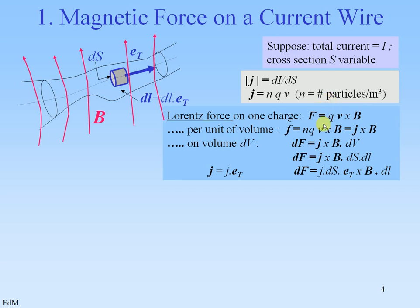Per unit of volume, since we have N particles per cubic meter, it will be NQV times B, or that can be written as J times B, a factorial product. This is per unit of volume, so for the volume DV we have to multiply with DV, or that is DS·DL. When we take J and DS together, we can write the vector J as the modulus of J times ET, and then we have this expression with ET times B. And since we can take ET and DL together in a vector DL, we have the well-known expression for the Lorentz force on a volume element — a line element of a current line.